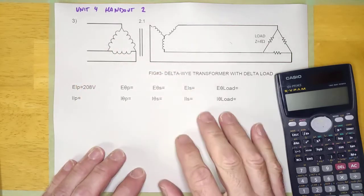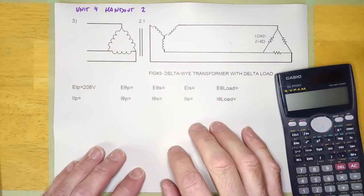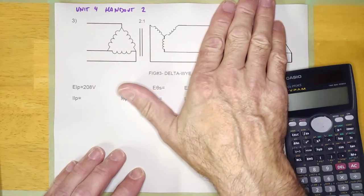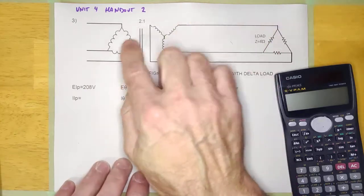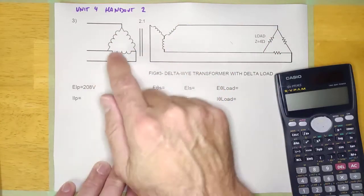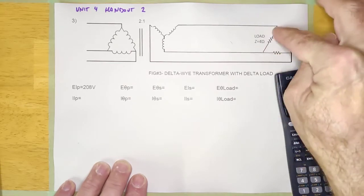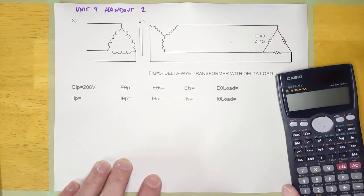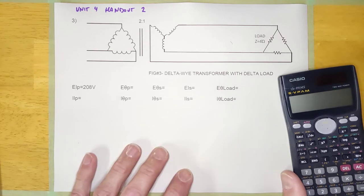All right guys, so this is a question from Unit 4 Handout 2. It will be your homework assignment as well. You'll notice that there's a three-phase transformer here with a ratio of 2 to 1, delta on the primary side, Y on the secondary side. But now I've added a load, which happens to be delta. The load could be delta or Y — we calculate it differently depending on which one it is, but it could be either one.